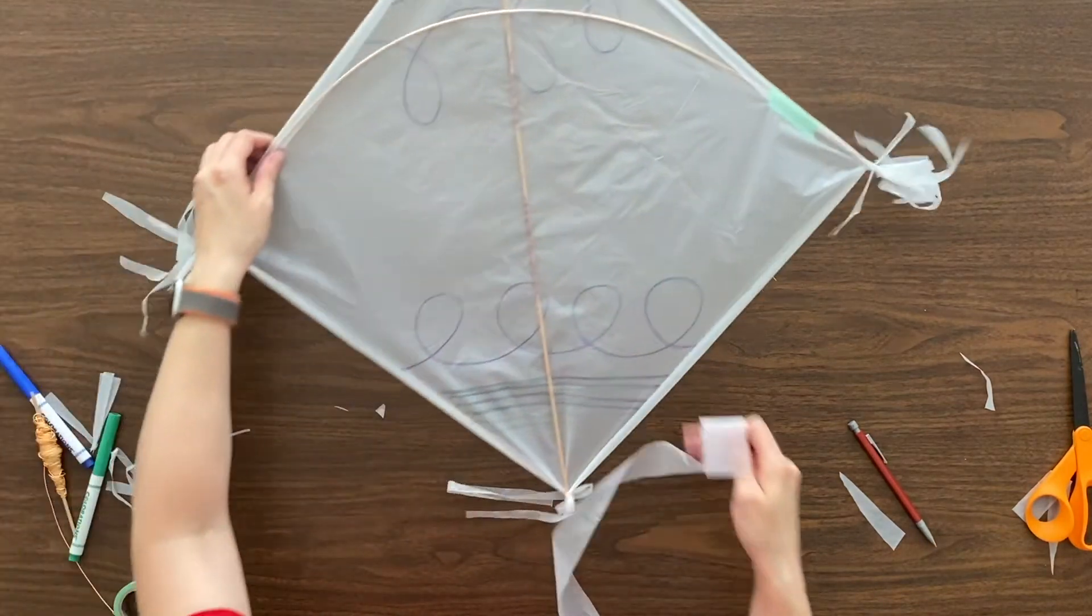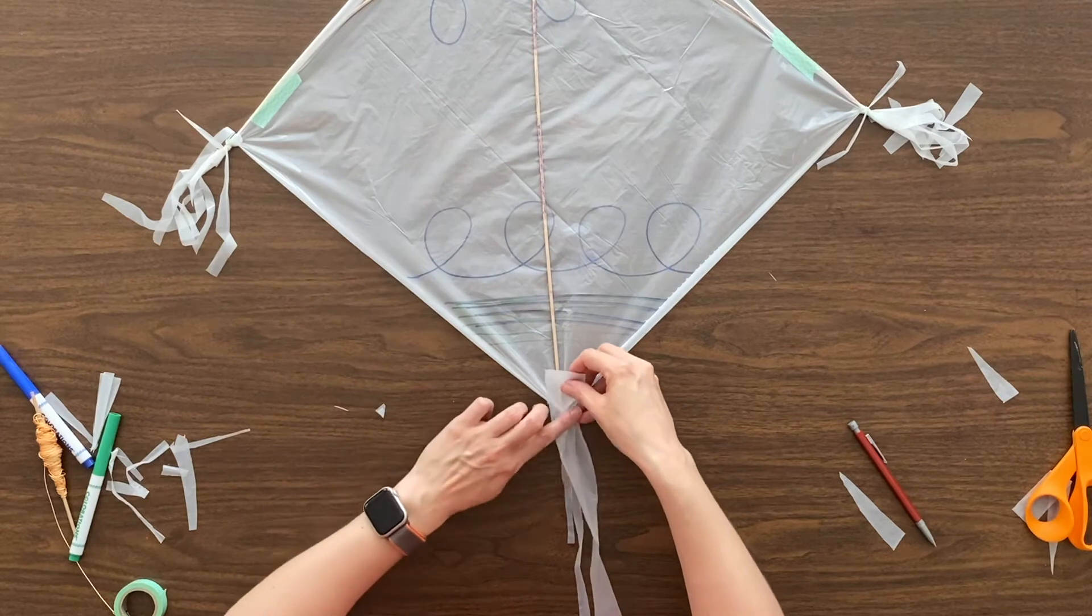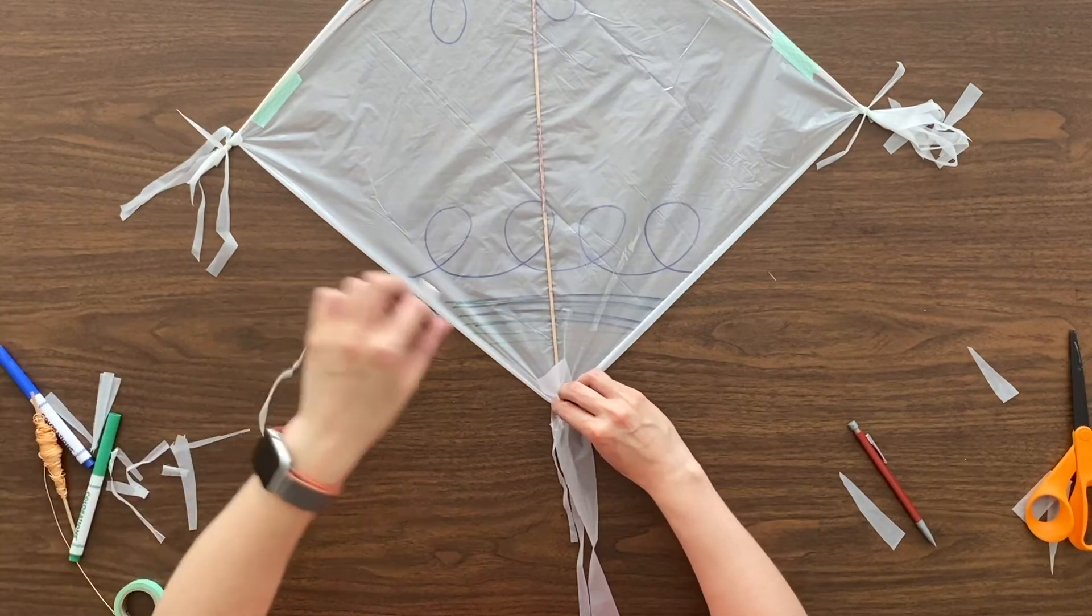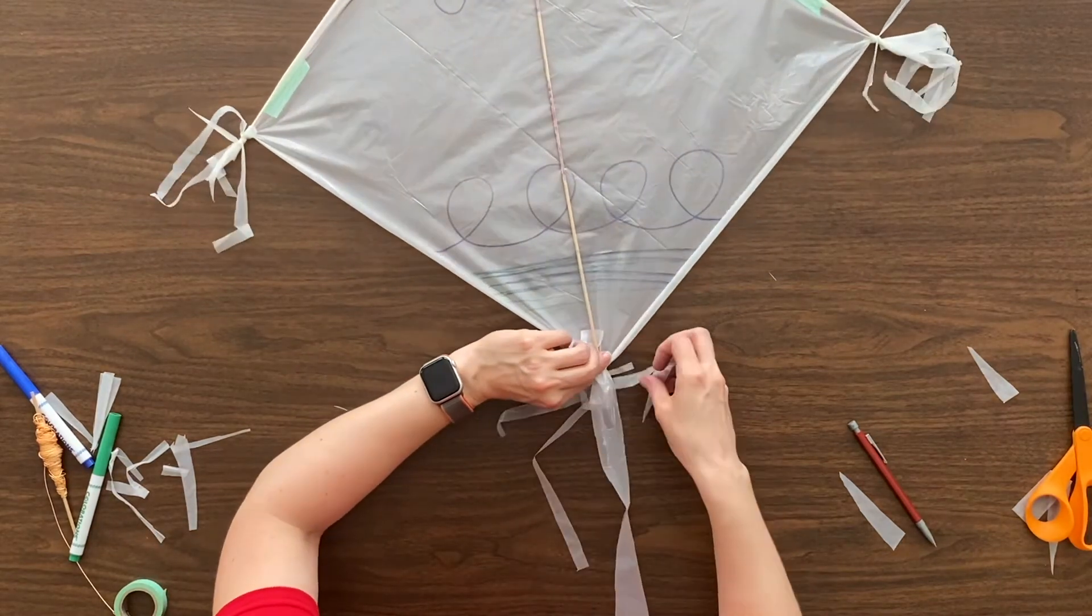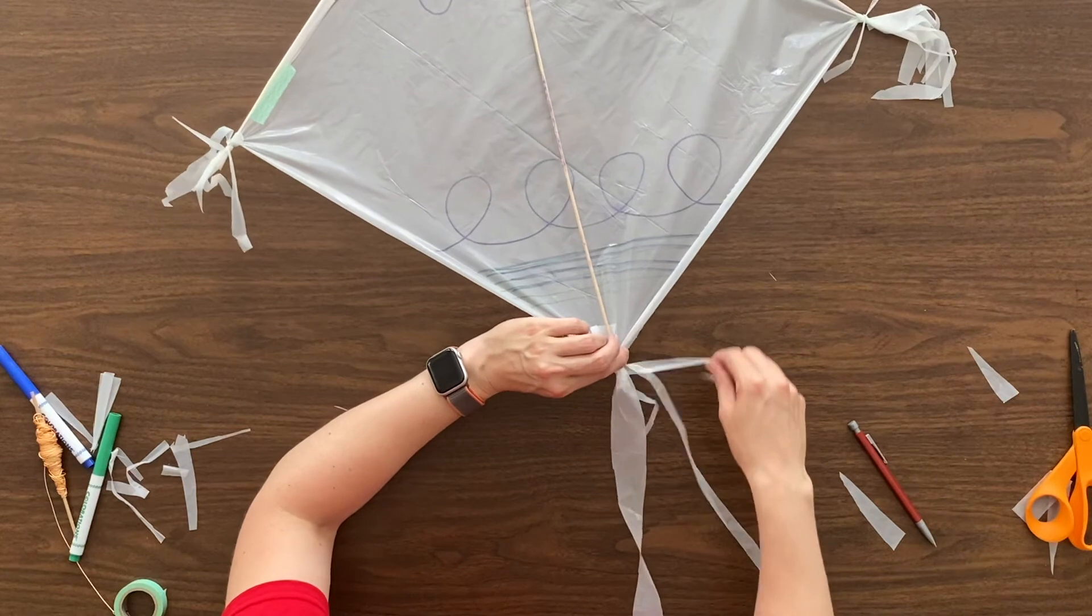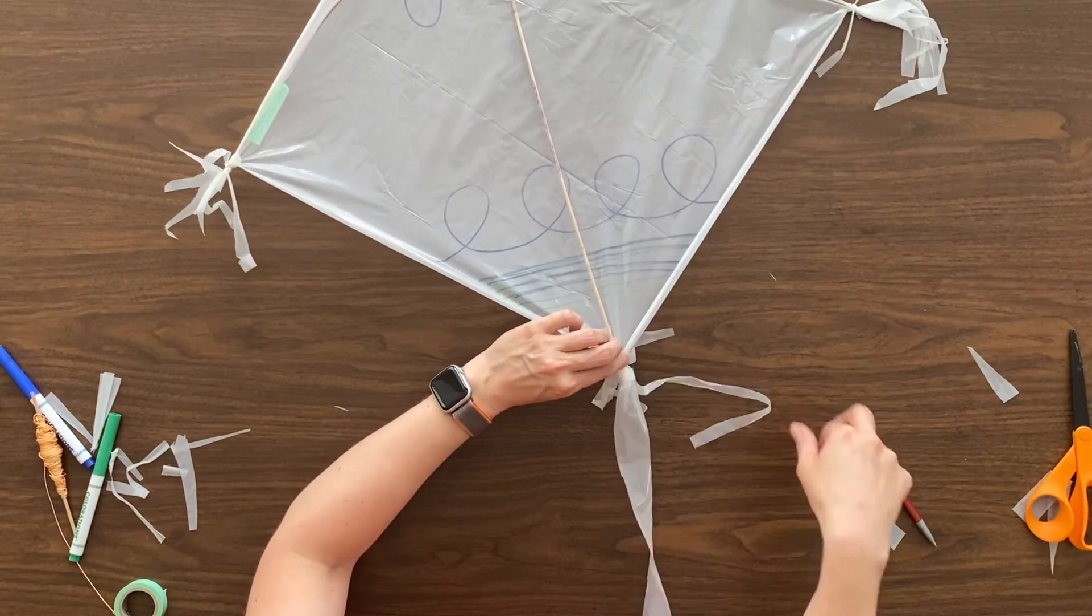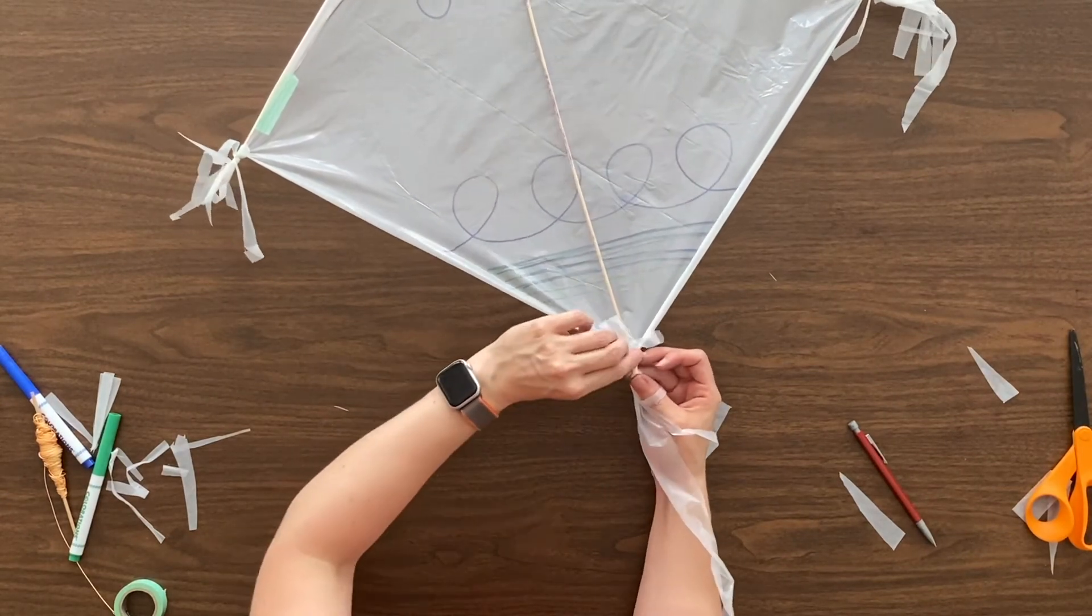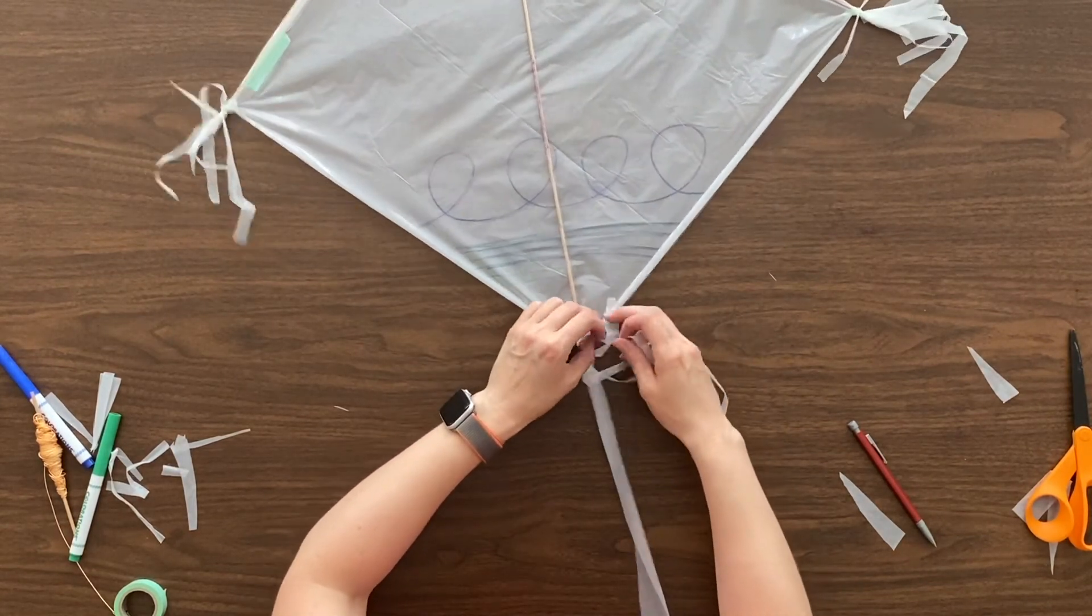You are going to attach the tail to your kite. So this is the corner farthest from the crossbar. Leave a little bit of the tail up on that straight dowel. Take another tie, and loop it around the dowel, the tail, and the plastic of the kite. And tie that in a knot.